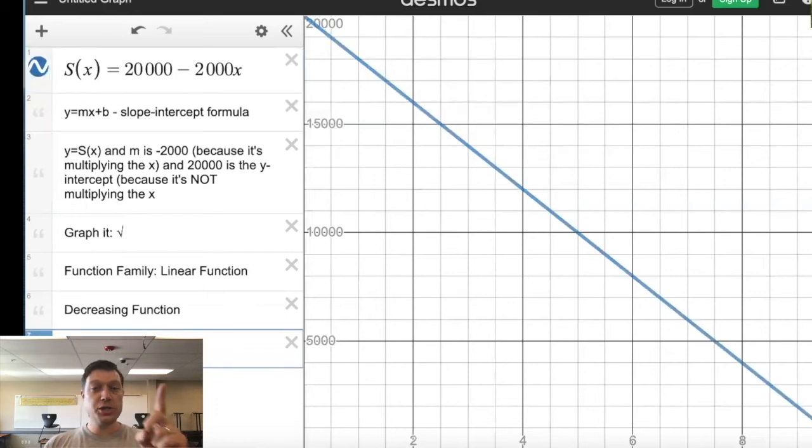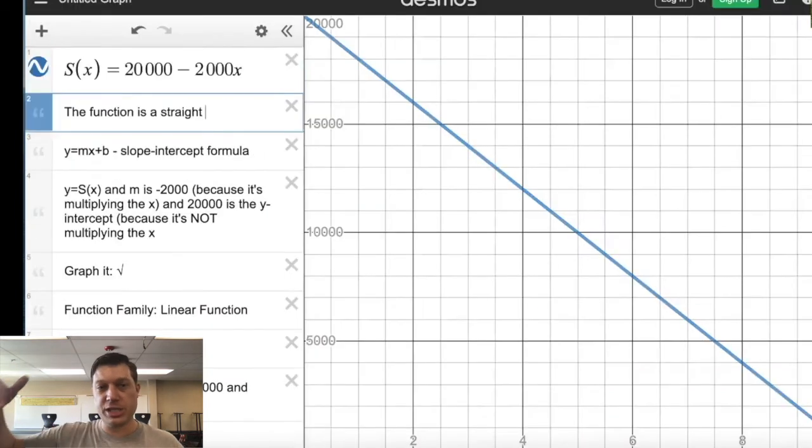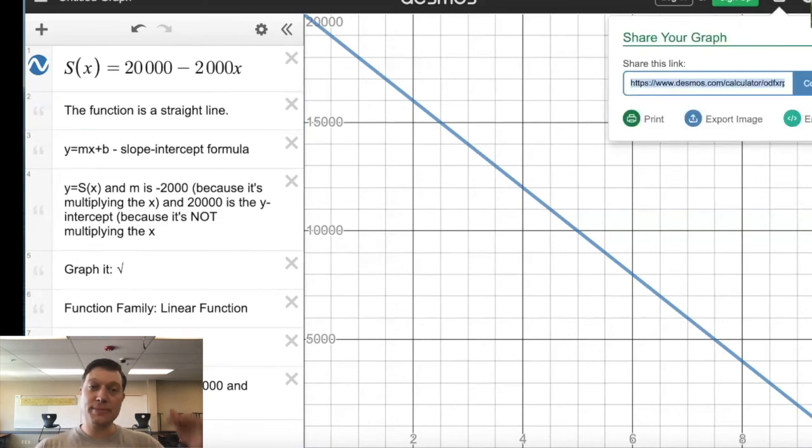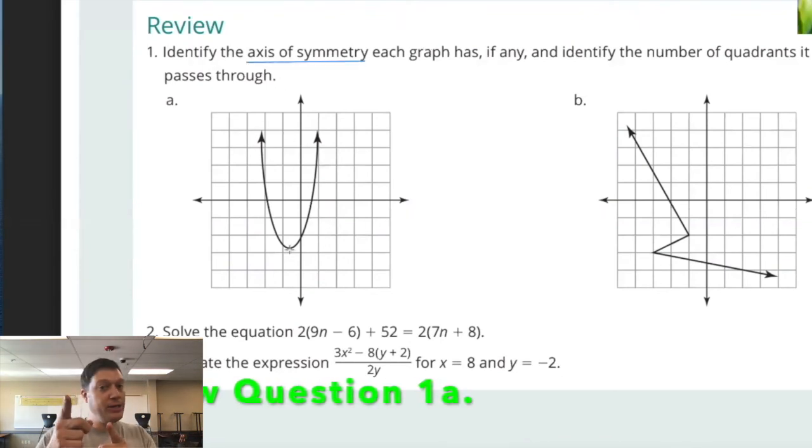Make sure you define the function family, this is linear. Make sure you talk about if it's an increasing, decreasing combo function. It's actually decreasing from left to right, it's going down. Maybe within this interval, just because of the way the context of the problem is, that this function has an absolute max at 20,000 and an absolute minimum at zero. Where those occur also matters.